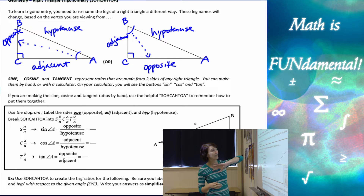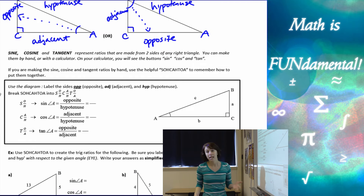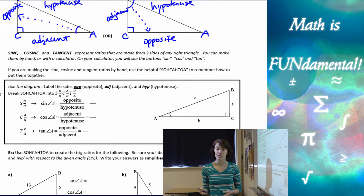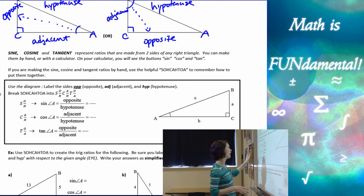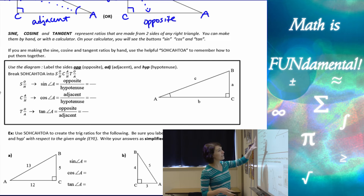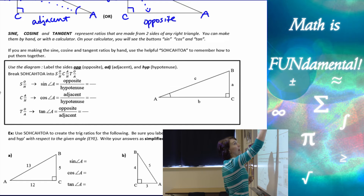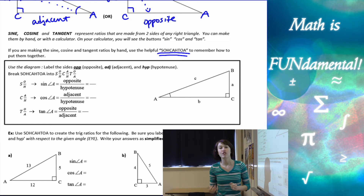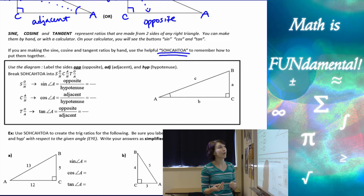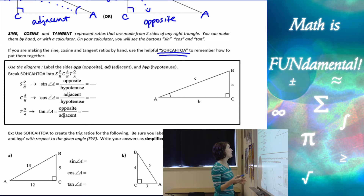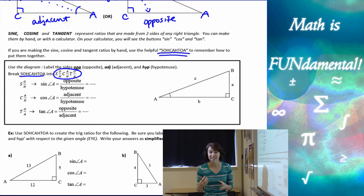Sine, cosine, and tangent represent the ratios made from any two sides of our triangle, and we can either do them by hand if we're given enough information, or sometimes we're going to use our calculators — and you'll see both in this lesson. What you really want to focus on, and what helps you remember how to set these up, is what we call SOHCAHTOA. This is a helpful way of remembering how to set up our sine, cosine, and tangent.